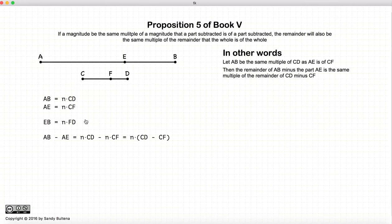Or in other words, EB is going to be the same multiple of FD. If we write this algebraically, N times CD minus N times CF will be equal to N times CD minus CF.